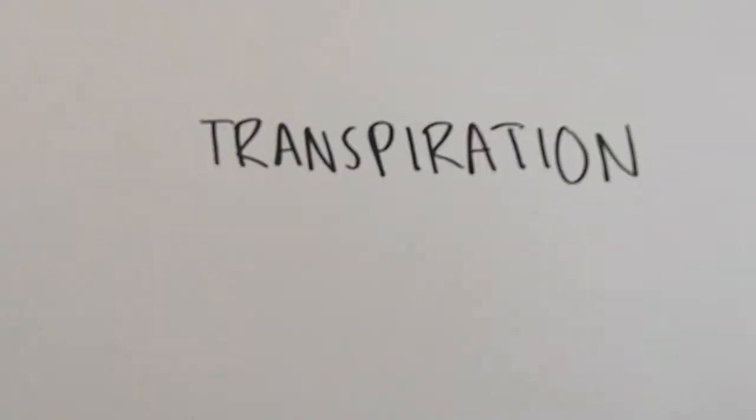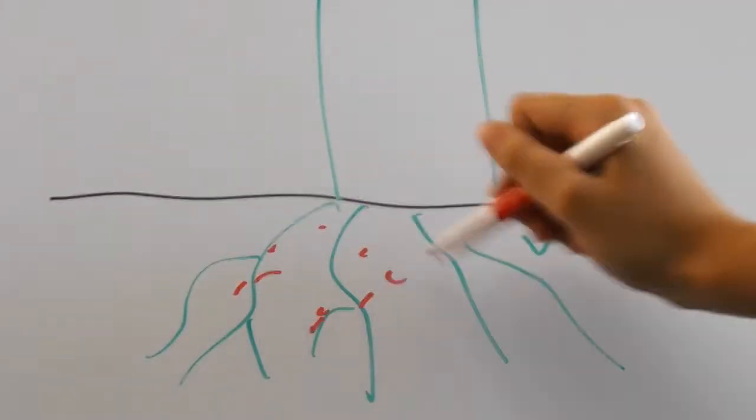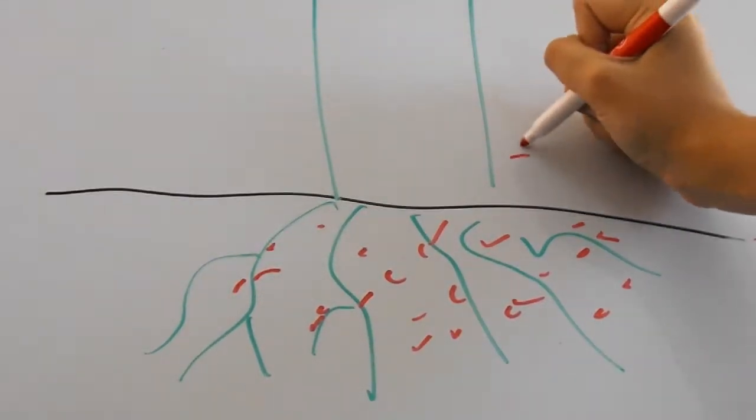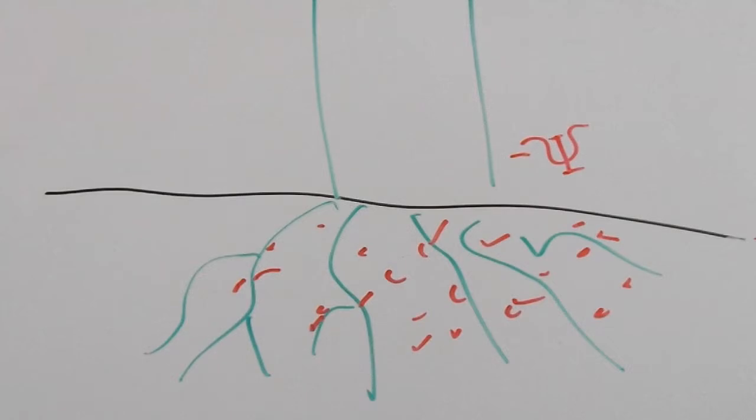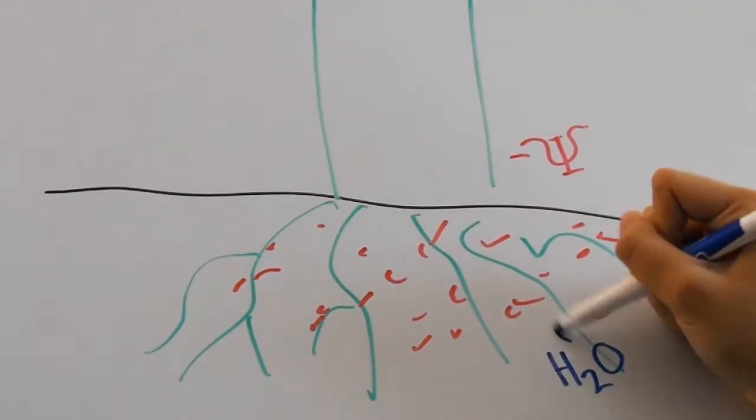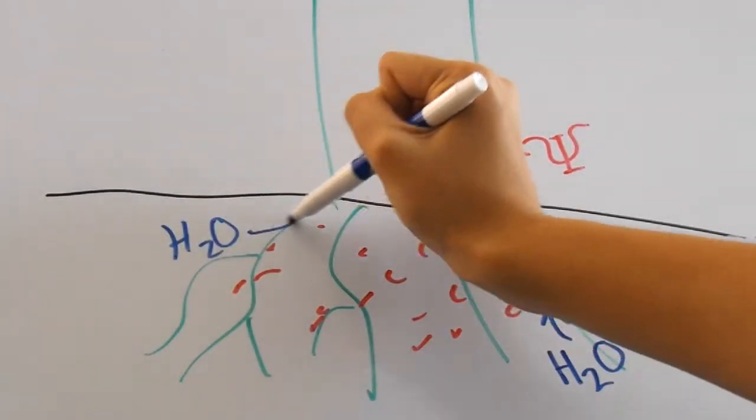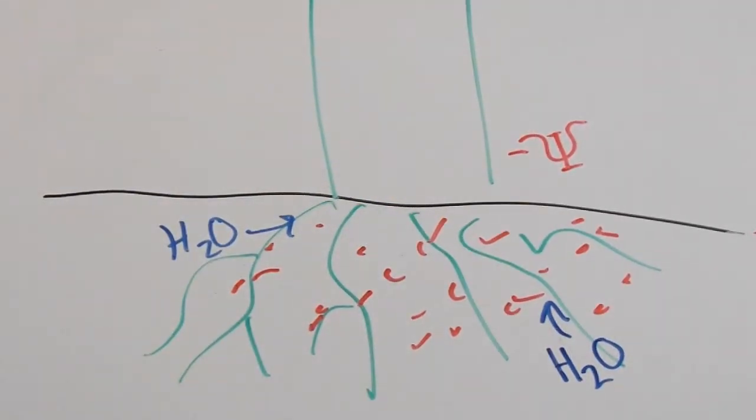There's also a mechanism called root pressure, which is when the root cells have a very high solute concentration. This causes the water potential in the root cells to lower a lot, resulting in a flow of water. This can push the sap in the xylem up a few meters.